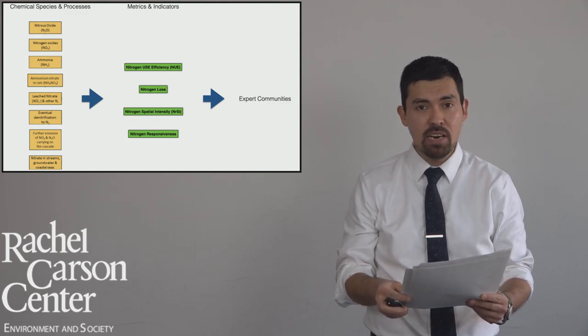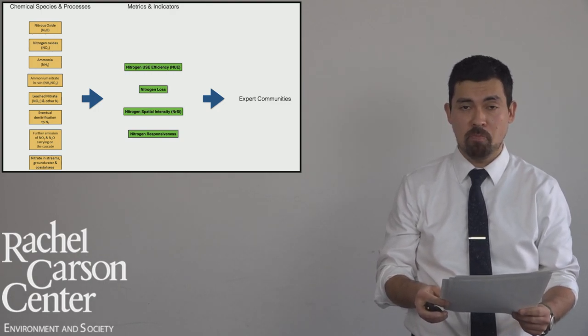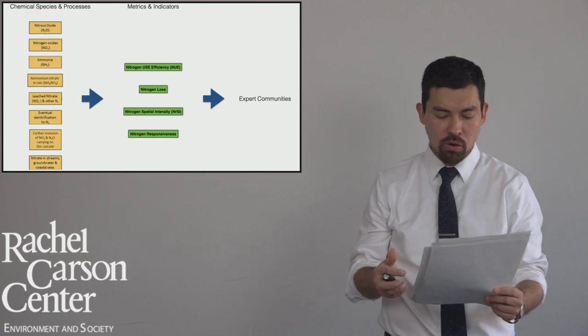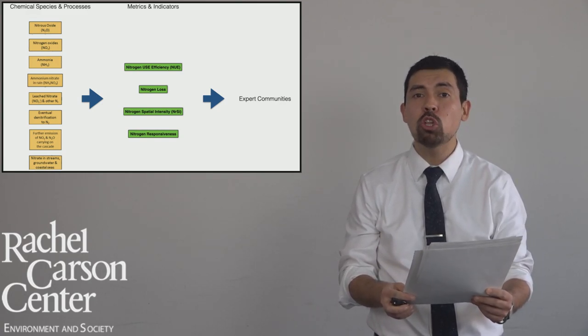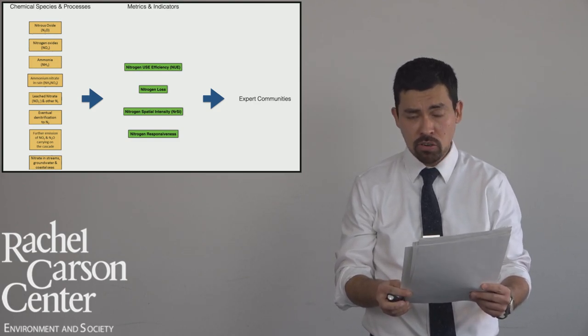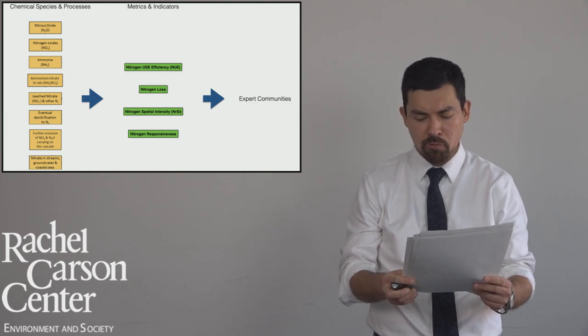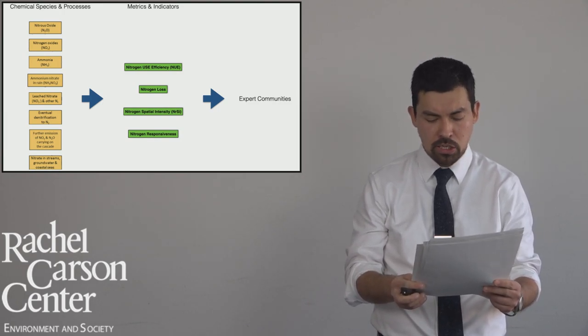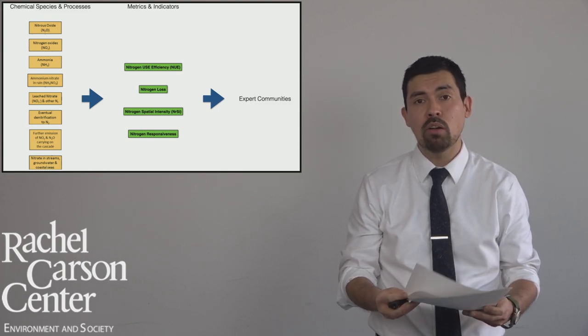Researchers agree that uneven estimations of global nitrogen flows are due to several reasons. First, biochemical cycles are complex and studies are only able to address part of the cycle and specific chemical species. Second, data at a global scale are still scarce and, except from the information gathered by satellite images or global models, data coverage is not homogeneous across the globe.